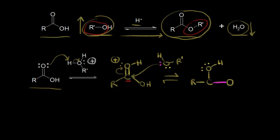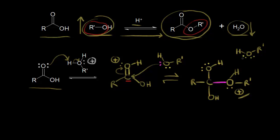This lone pair on the oxygen forms the bond between carbon and oxygen. On this oxygen, there's still a hydrogen, an R prime group, and one lone pair of electrons, giving this oxygen a plus one formal charge. There's still an OH bonded to our carbon. The next step is to get rid of this plus one formal charge on our oxygen. Another molecule of alcohol comes along and this time acts as a base — it's going to take this proton and leave these electrons behind on the oxygen.